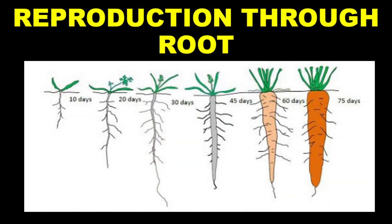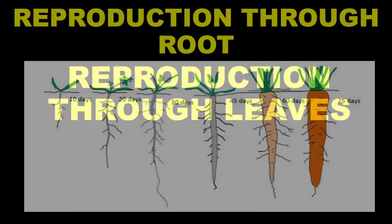If you place these fleshy roots in water, you will see hair-like outgrowths come out — these are tertiary and secondary roots. You will also see shoot appearance coming up from the top. Note that regular potato is reproduction through underground stem, but sweet potato is an example of reproduction through roots.